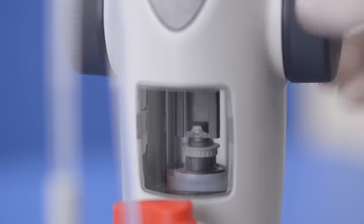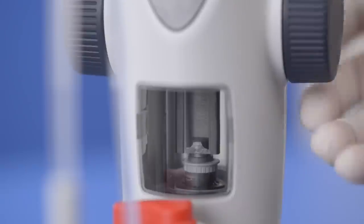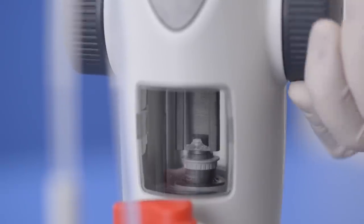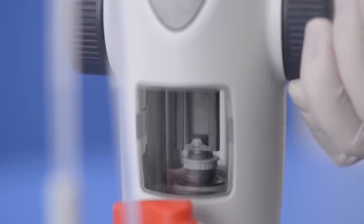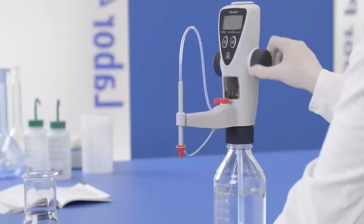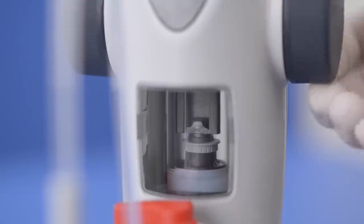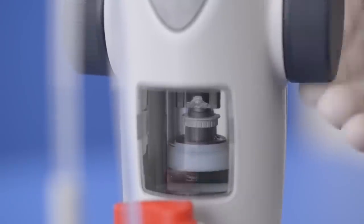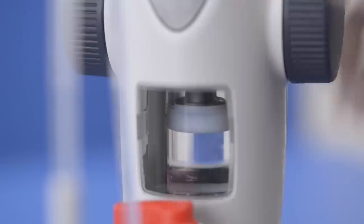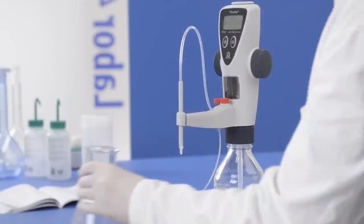Then fill with liquid with a half turn and empty it to the stop in a single stroke. As you can see, the titrant is returned to the bottle. Repeat until there are no longer air bubbles present.